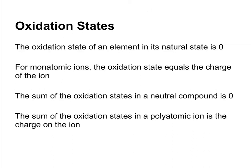Assigning oxidation states is pretty easy. For an element in its natural state — be that solid, liquid, or gas — it has an oxidation state of zero. Monatomic ions, like a sodium ion or chlorine ion, have an oxidation state equal to the charge of the ion, which we know based on where they are on the periodic table. In a neutral compound, the sum of the oxidation states is going to be zero, meaning positive and negative oxidation states cancel out, similar to charges in an ionic compound.